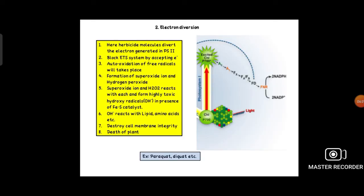Next is electron diversion or electron diverters. The bipyridyl group of herbicides causes this type of inhibition, for example paraquat and diquat. Here, herbicide molecules divert the electrons generated in photosystem II. The electrons generated in photosystem II transport through photosystem I, moving in the electron transport carriers, reaching NADP and forming NADPH. This is the reason electrons travel from photosystem II followed by photosystem I.